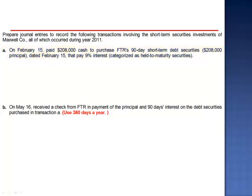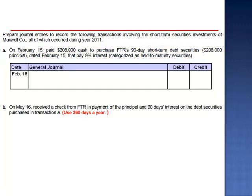The journal entry to record the purchase is a debit to the investment account, short-term investments held to maturity, $208,000, and a credit to cash.